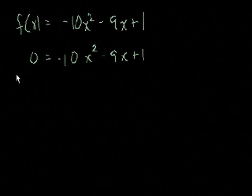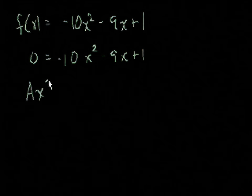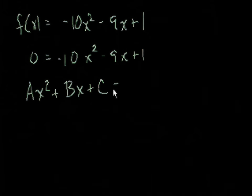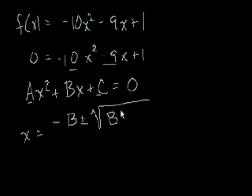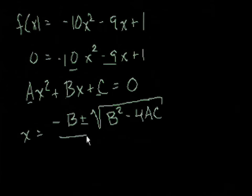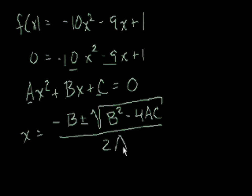Here we can use a tool called the quadratic equation, and this is one of the few things in math that's a good idea to memorize. The quadratic equation says that the roots of a quadratic ax squared plus bx plus c equals 0 are: x equals negative b plus or minus the square root of b squared minus 4ac, all over 2a. I know it looks complicated, but the more you use it, you'll see it's not that bad.